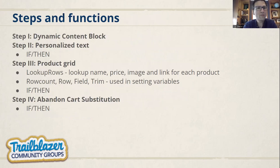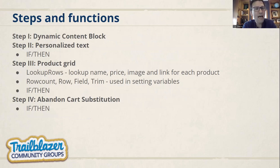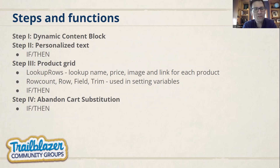The steps we'll walk through: using out-of-the-box functionality with a dynamic content block, doing an if-then statement for personalized text, and for the product grid, using the lookupRows function to pull up a variety of data points based on each featured product. For the abandoned cart solution, we'll use an if statement to sub in the abandoned cart email itself. Those are our use cases and we'll dive into the platform.